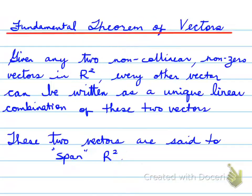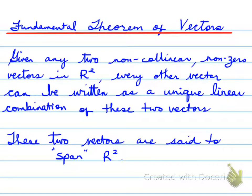All right, let's go back to the previous page. So, given any two non-collinear, non-zero vectors, we can write every other vector as a unique linear combination of these two vectors. So, let's look at an example.